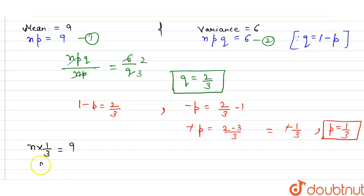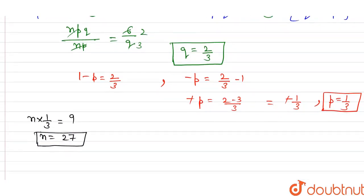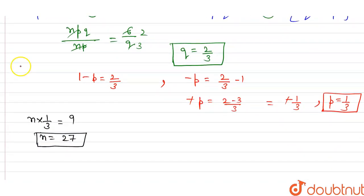given by the relation nCr p^r q^(n-r). So substitute all these values, then we